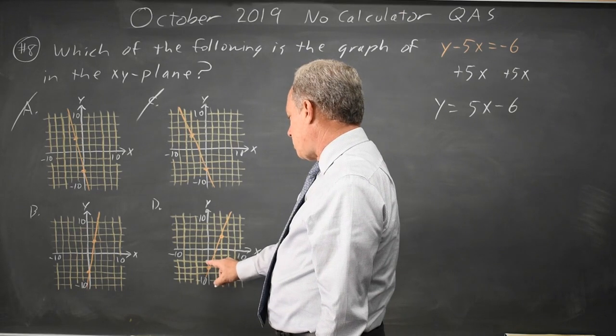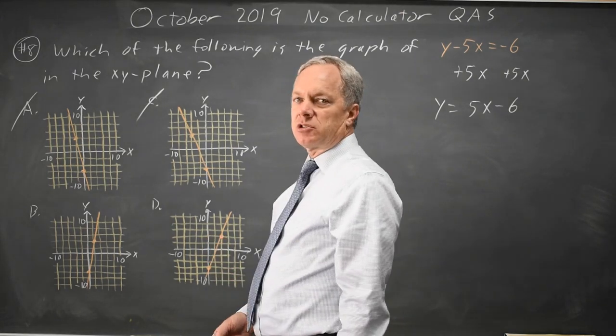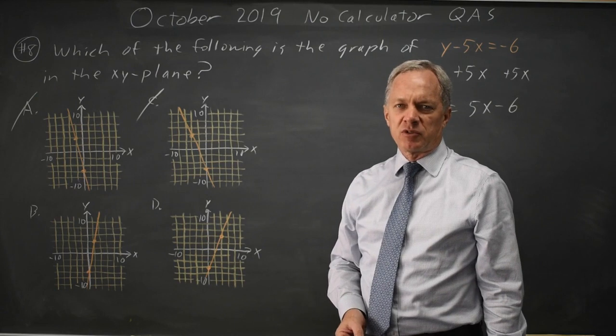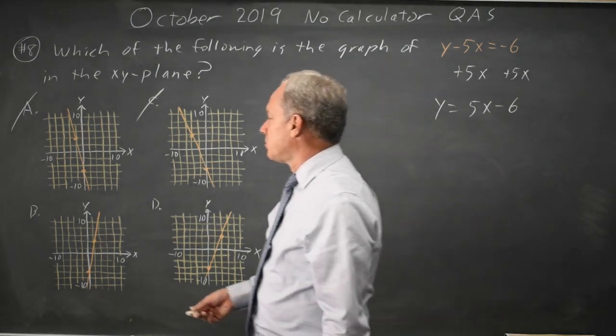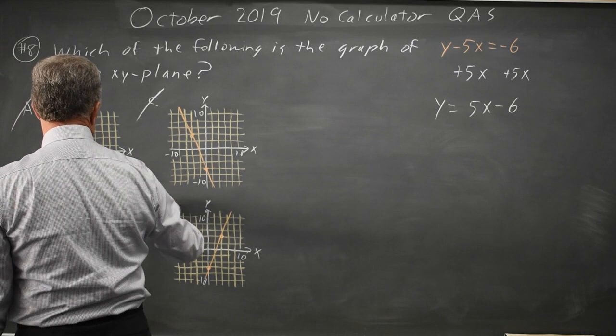D, we go up 1, 2, 3, 4, 5 squares, we go right 2 squares, that's up 5 over 2, up 5 halves. So B is the one that has a slope of positive 5, and D does not.